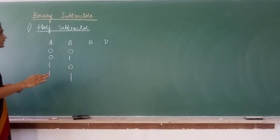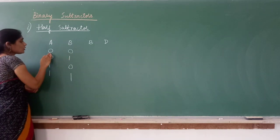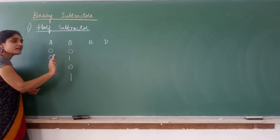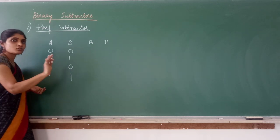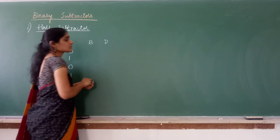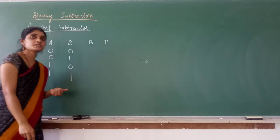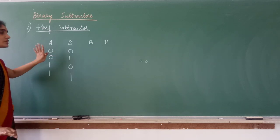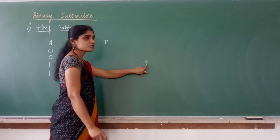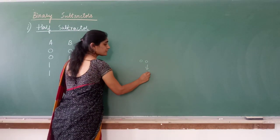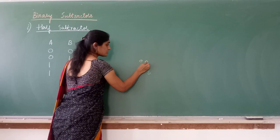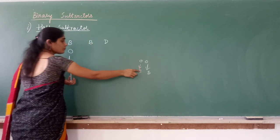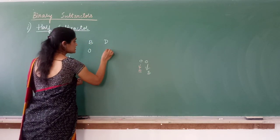Let us write the subtractor truth table. For the first case: zero minus zero is zero. How do we represent zero in binary? Zero zero — two bits. So difference is 0 and borrow is 0.